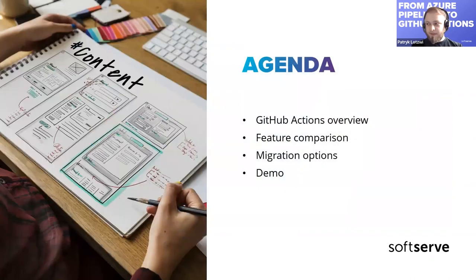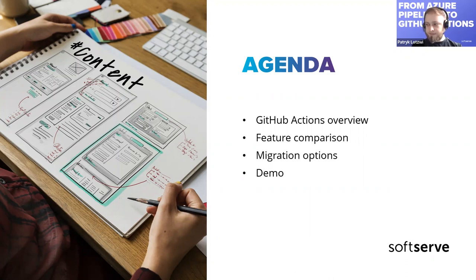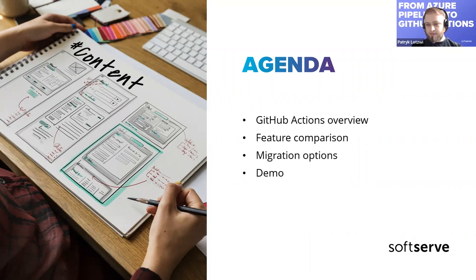But that's enough about me. The agenda for today: first I want to jump a little into history to see what we had before and what we have now, how GitHub Actions looks currently, then compare features between Azure DevOps and GitHub Actions — what's available, what's missing, what's different. Then I'll present migration options and a short demo regarding mostly the migration part.